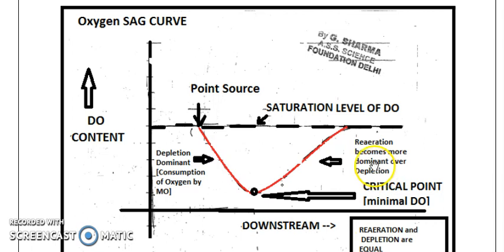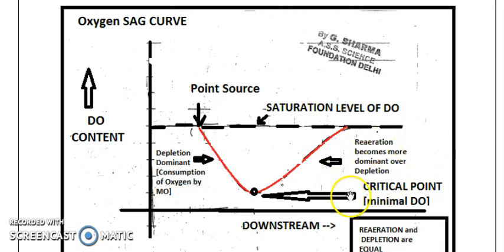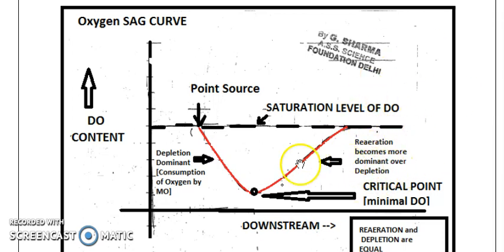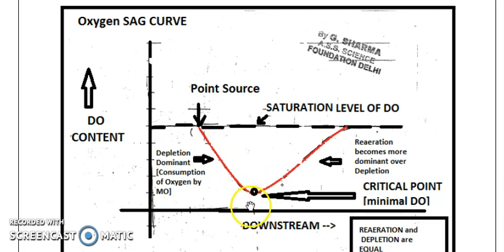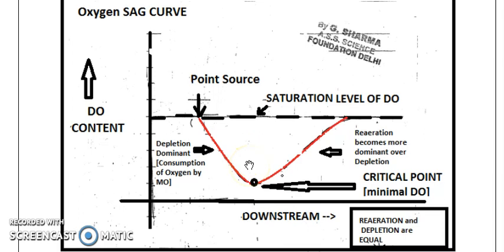In the right half, DO starts improving — DO is higher and BOD is lower. This happens because oxygen increases as reaeration becomes the dominant process compared to depletion. So in the right half, reaeration dominates over depletion: DO increases and BOD decreases. In the left half, depletion dominates over reaeration: DO decreases and BOD increases. At the critical point, water quality in terms of DO is at its worst.